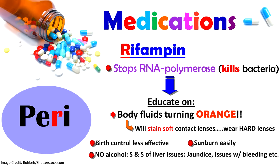R is for rifampin, which stops RNA polymerase and kills the bacteria. One notable side effect to warn patients about is that it can turn body fluids — urine, sweat, and tears — orange. Reassure patients this is expected, and advise those wearing soft contact lenses to switch to hard lenses as the drug will permanently stain soft lenses. Educate patients on hormonal birth control that it will be less effective, to avoid prolonged sun exposure due to increased skin sensitivity, and to avoid alcohol.